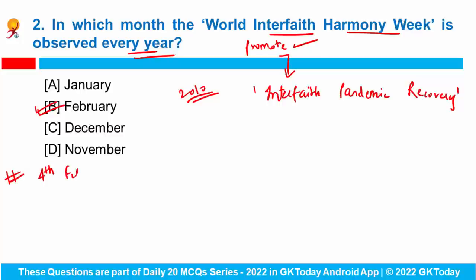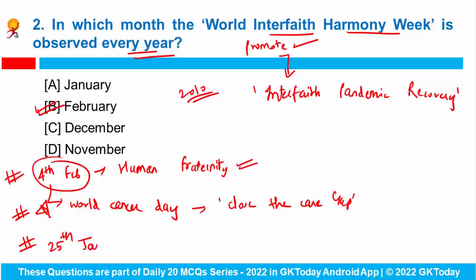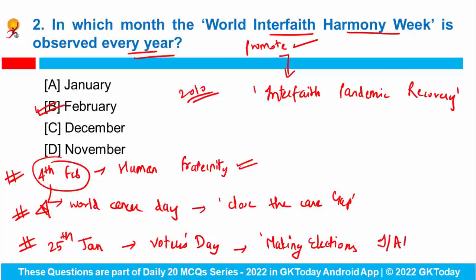Also, 4th of February is observed as International Day of Human Fraternity, which showcases how diverse religions and cultures enrich our life. Additionally, 4th of February is observed as World Cancer Day, and the theme for 2022 was 'Close the Care Gap'. The 25th of January is observed as National Voters Day, with the theme 'Making Elections Inclusive, Accessible and Participative'.